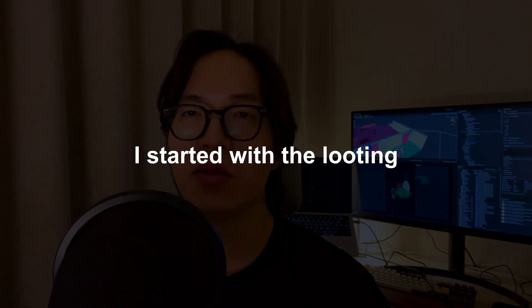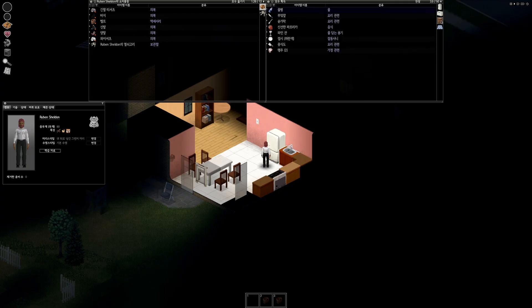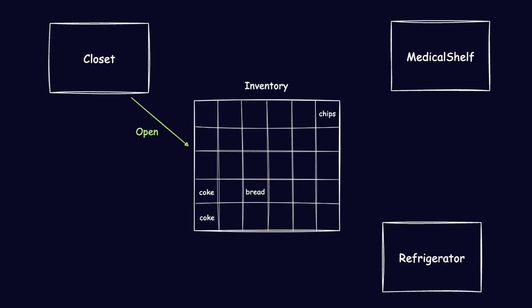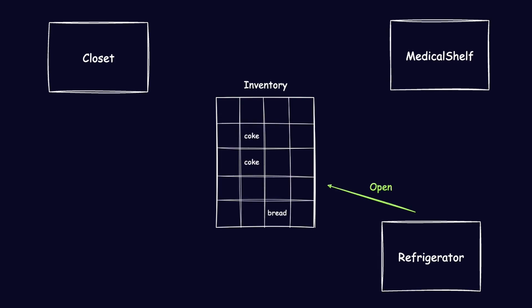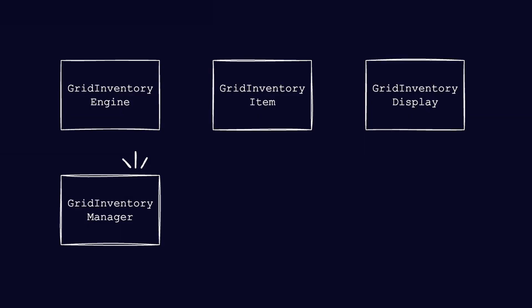But you know, this is actually just the beginning. None of the inventory features I planned have been implemented yet, and it's time to tackle them one by one. I started with the looting-related inventory work. Players need to be able to farm items from props, which means props might need their own inventories. I chose to make an inventory for each prop since I thought it'd be much simpler. Maybe there could be performance or memory issues, but I think it's not too late to fix those problems when they actually happen. So I added a grid inventory manager to handle multiple inventories.